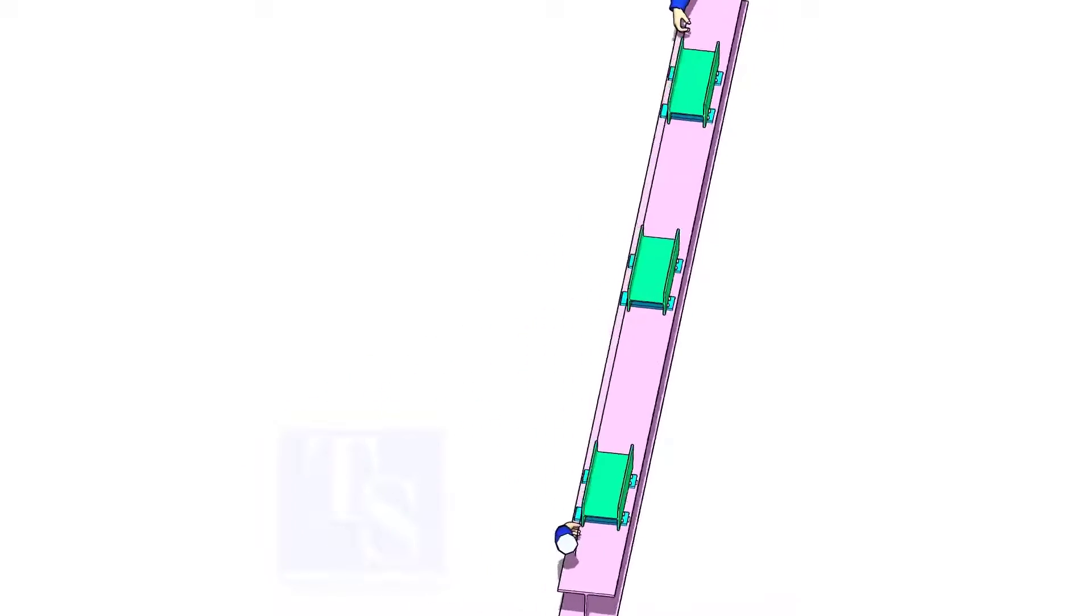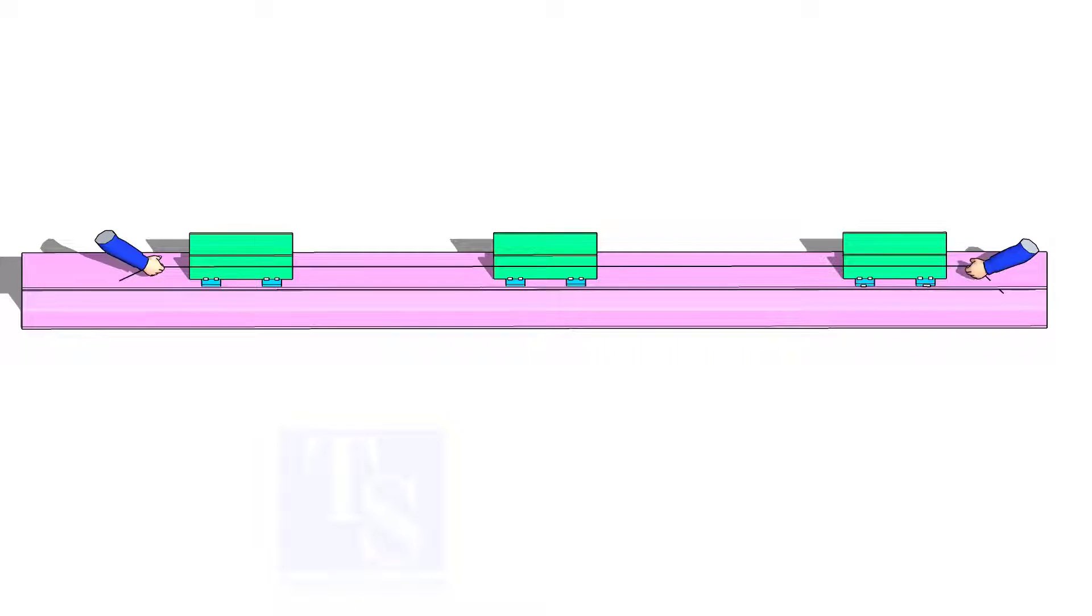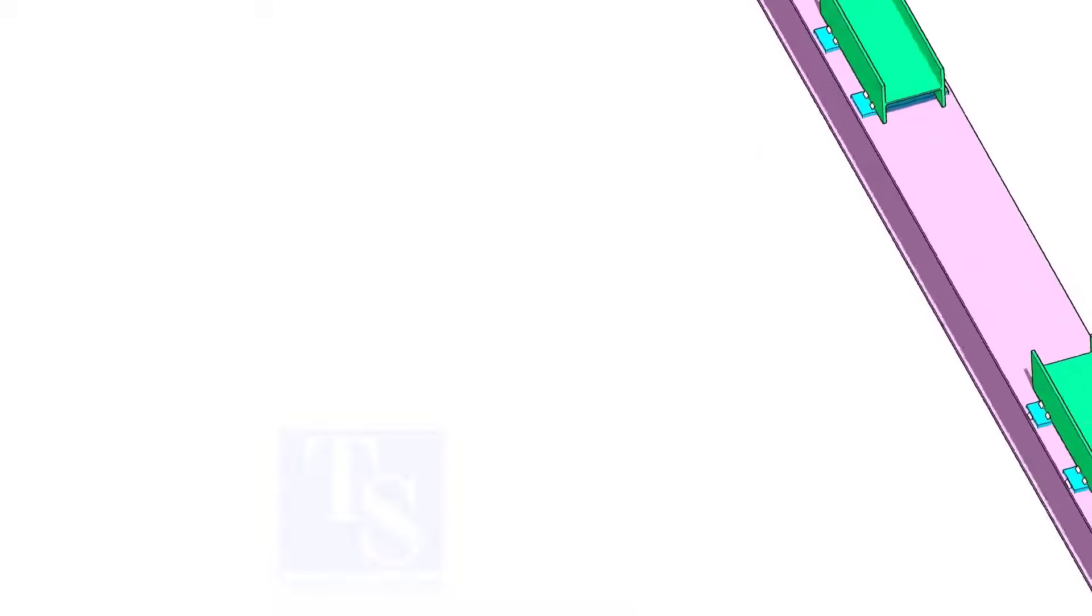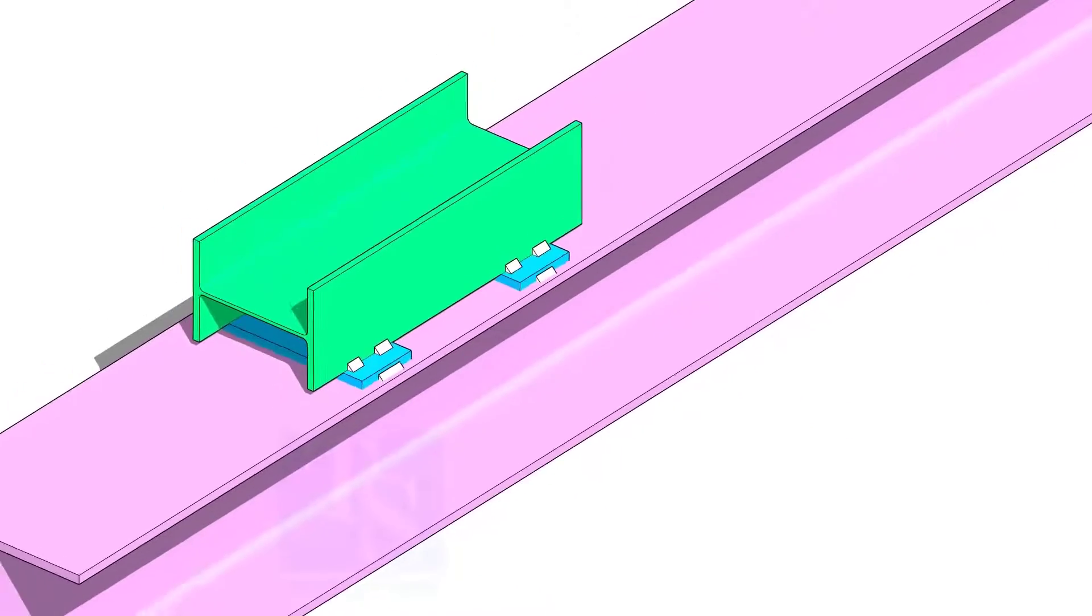Put three pieces of jigs on a straight platform. I prefer a straight beam because it is easily available in a construction site. Make sure the jigs are in line. Tack weld the jigs on the beam.